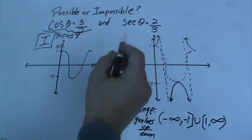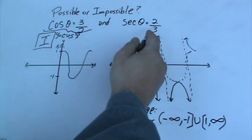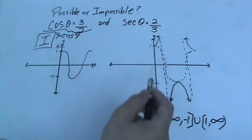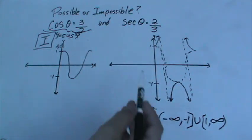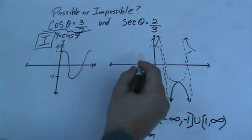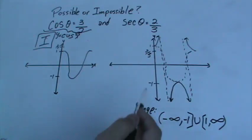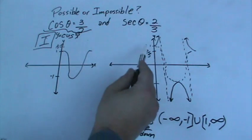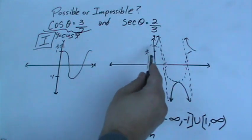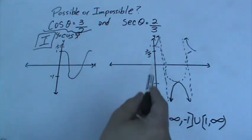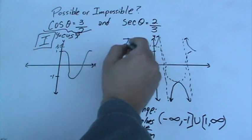So we're going to think it the same way. Secant of any x that I plug in will it ever equal 2 thirds? No, because where is 2 thirds? 2 thirds is less than 1. Now does the graph even go through 2 thirds? No, it doesn't. Remember we're focusing on the solid lines. So this also would be impossible.